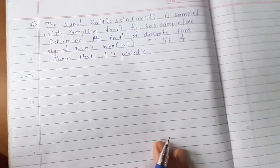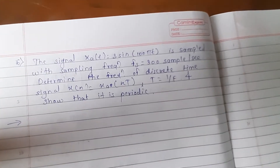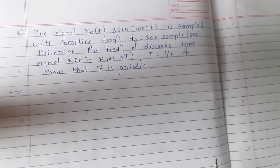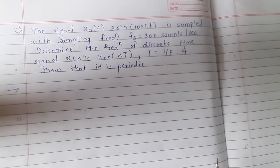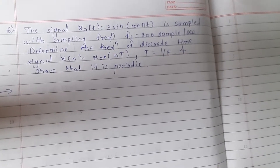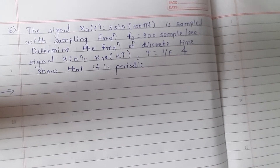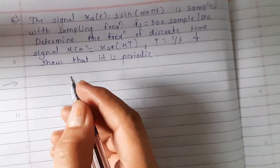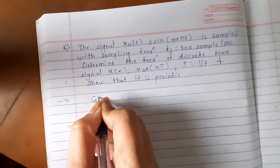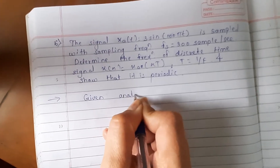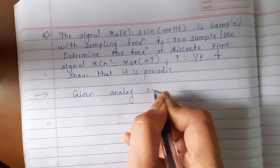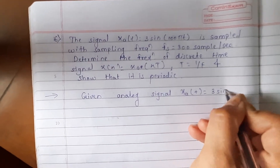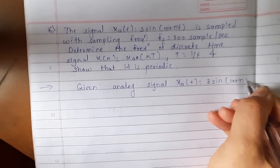The next problem: the signal xa(t) = 3sin(100πt) is sampled with sampling frequency fs = 300 samples per second. Determine the frequency of discrete time signal x(n) = xa(nT), where T = 1/fs, and show that it is periodic. The given analog signal is xa(t) = 3sin(100πt).